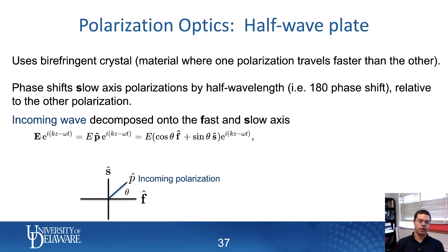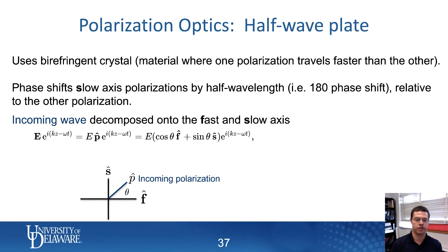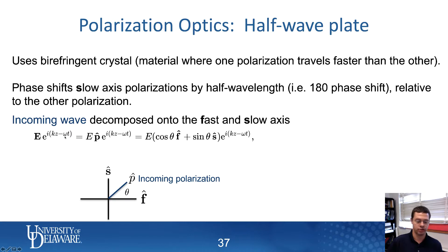Now I'm going to take an arbitrary incoming wave. Incoming light is just an electromagnetic wave. If it's linearly polarized light, then the two components are in phase with each other. In general, the electric field can just be written as some vector, and the direction of propagation or the wave-like portion can be written as e to the i(kz − ωt), where k is the wave vector and ω is the time frequency of oscillation. So I have some amplitude vector that describes the electric field portion, and that has to lie in the xy plane.